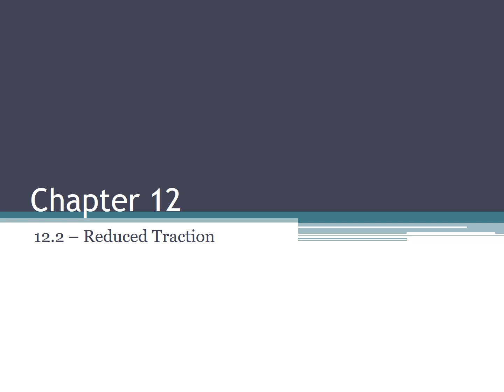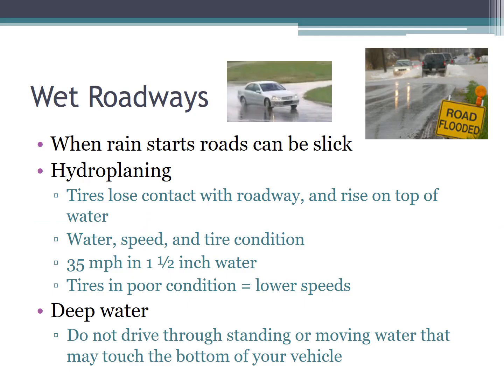Continuing in chapter 12 — when it starts to rain or snow, that's when roads are the wettest, because the water and the oil on the road don't mix. The oil comes to the top and makes it slick. Hydroplaning is when your tires lose contact with the roadway — you're essentially floating on water.